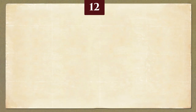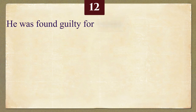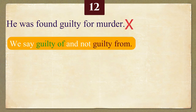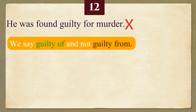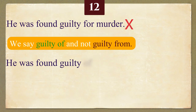Number 12 is: he was found guilty for murder — this is incorrect. Please note, we say guilty of, and not guilty from. Please repeat the correct sentence after me: He was found guilty of murder.